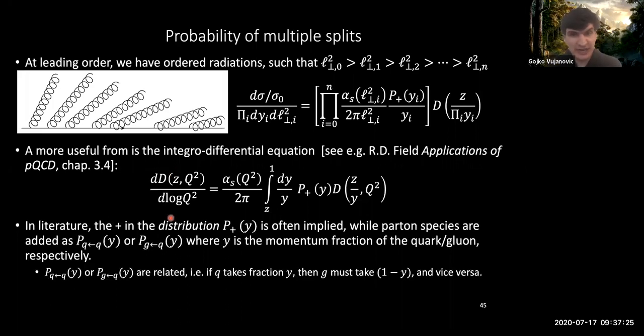The one quick note that I would like to just highlight for people if they want to read more about how this comes about, there's actually a very nice derivation in this reference that I'm showing up here. But typically in books on perturbative QCD, the splitting functions typically don't have this plus distribution happening in there, they're sort of assumed.